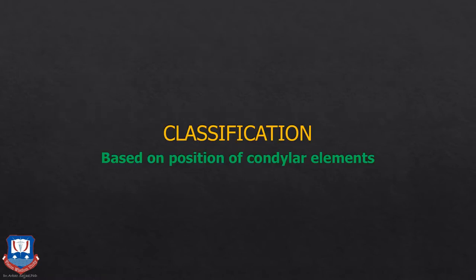Coming to the classification of articulators, there are different classifications, but we'll be diving into two types. First is based on the position of the condylar elements. Just like a TMJ joint, which consists of the condyle, the articular disc, the glenoid fossa, and the various ligaments of the temporomandibular joint.